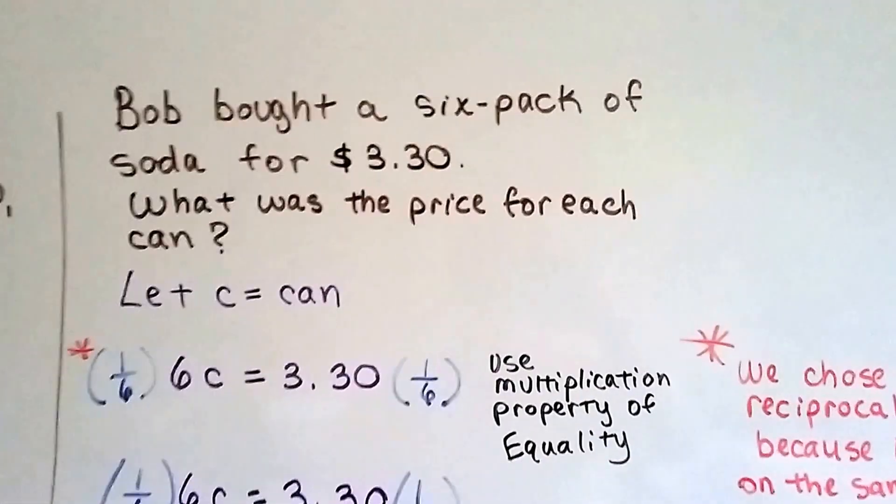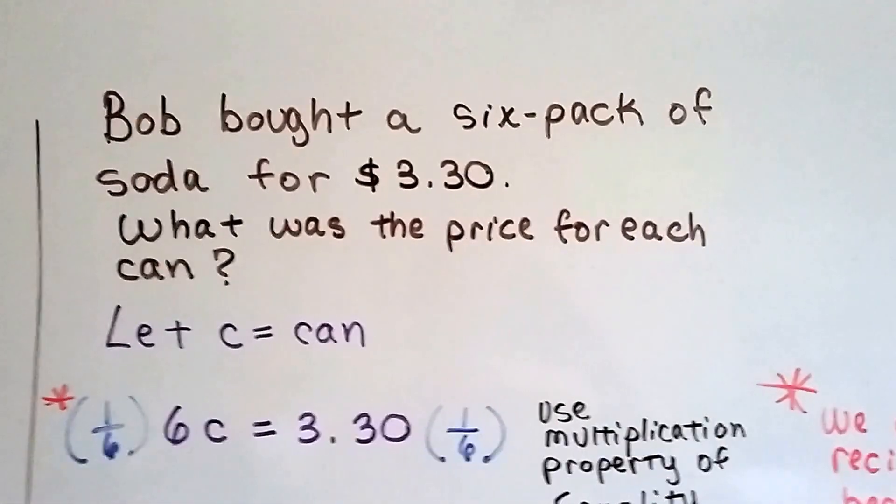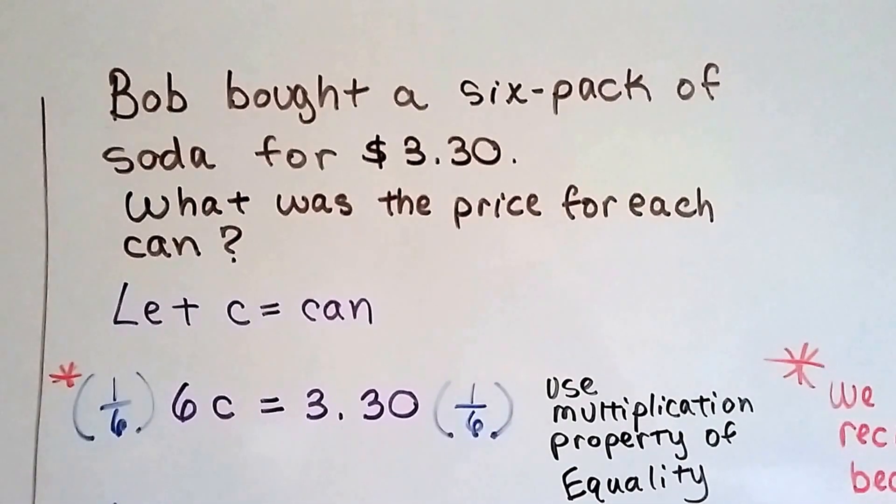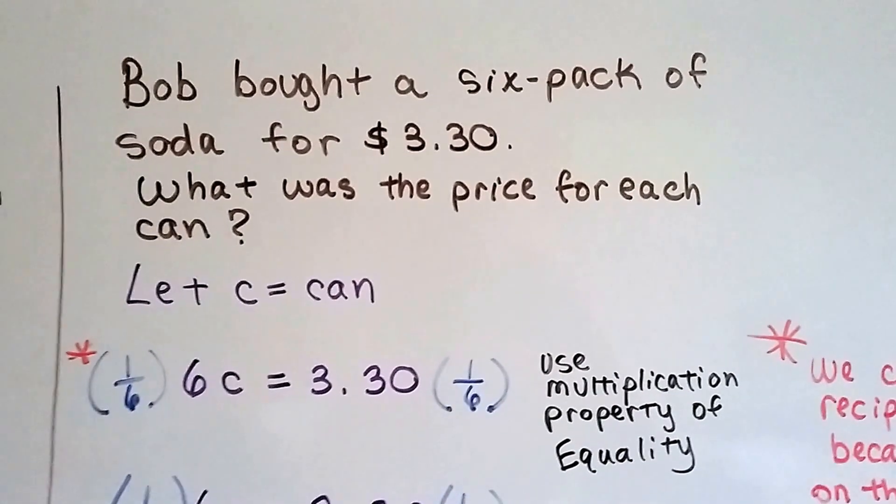All right, this one might be a little bit easier. Bob bought a six-pack of soda for $3.30. So what was the price for each can? So we're going to let C equal can. That makes sense, doesn't it?